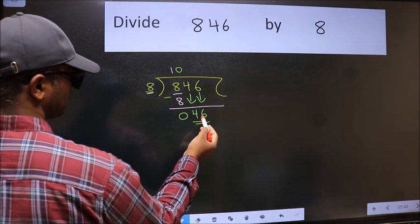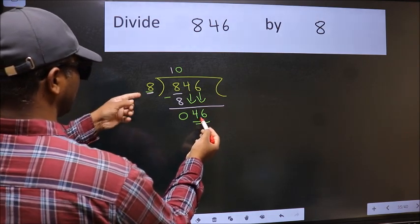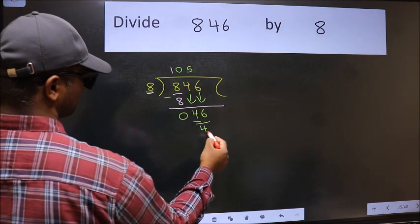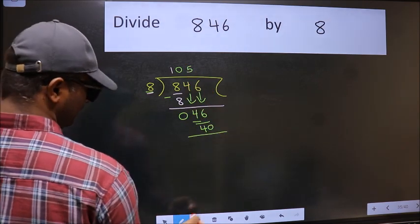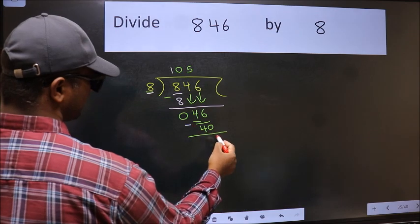Now 46. A number close to 46 in 8 table is 8 times 5 equals 40. Now we should subtract, we get 6.